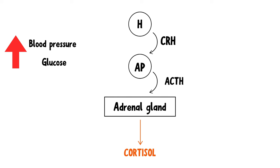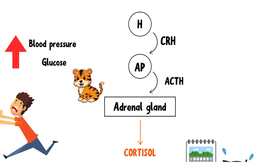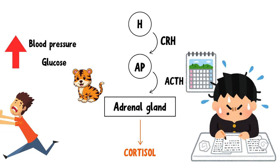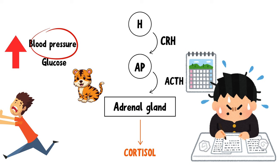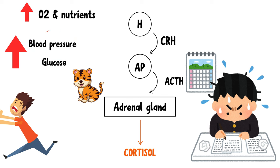Why do we need high glucose and high blood pressure to deal with stress? Increased glucose levels support immediate energy needs, which can be critical for physical actions like running or heightened mental alertness in response to stressors. Similarly, high blood pressure prepares your body for the fight-or-flight response — high blood pressure means high blood flow, and that means more oxygen and nutrients are delivered to vital organs and muscles, allowing for quick physical responses.